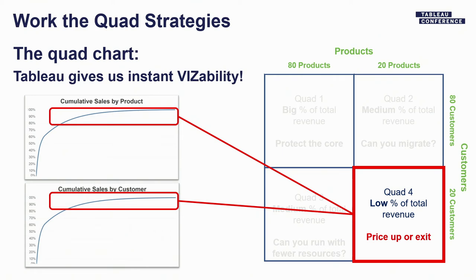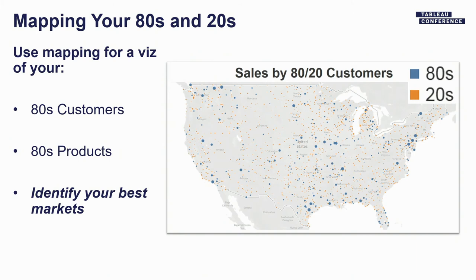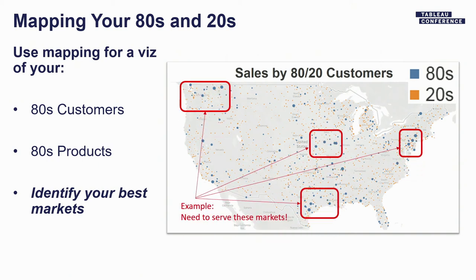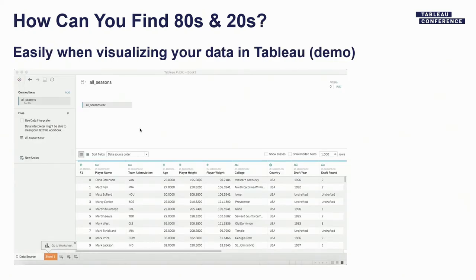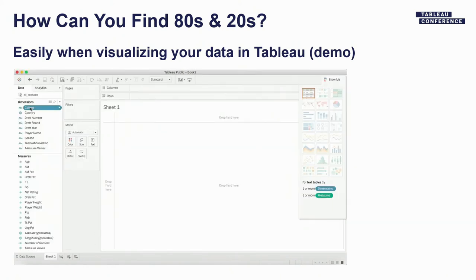Another thing we can use Tableau for is mapping our 80s and 20s — charting where your 80s customers and 20s customers are, and where your 80s products are concentrated, to make sure you're serving those markets really well. I'm going to walk you through a quick example — under three minutes — of how you can do an 80-20 analysis in Tableau. It's not intended to be a beautiful dashboard; it's bare-bones and functional, demonstrating the Tableau features for 80-20 analysis.